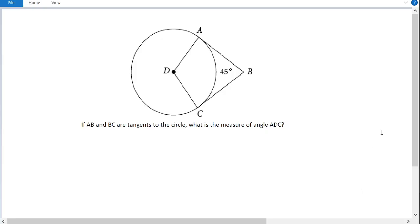Hey everyone, in this video we're going to be looking at another SAT geometry problem. In this one we have two tangents being drawn to a circle and we're given the angle that the tangents form with each other, and we want to find this angle right here, ADC.